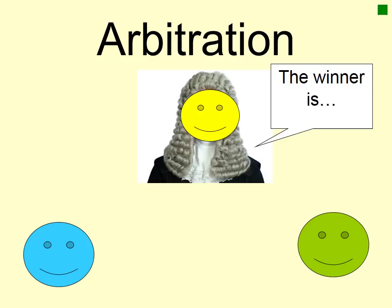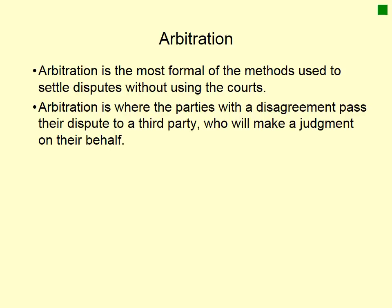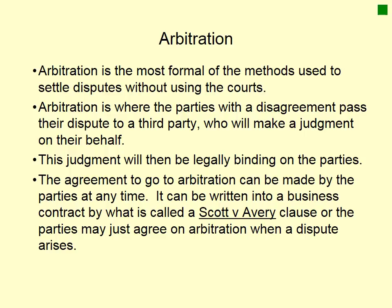Let's move on and look at arbitration. This illustration demonstrates what arbitration is about — the parties are at the bottom and the arbitrator makes a binding decision on who wins the case. It's the most formal method below tribunals. This is used where parties with a disagreement pass their dispute to a third party who makes a judgment on their behalf, and the judgment is binding — the parties can't choose whether to accept it. The agreement to go to arbitration can be made at any time, but in business contracts it's often inserted as a Scott v Avery clause, which says that if there is a dispute the parties must go to arbitration before going to court.